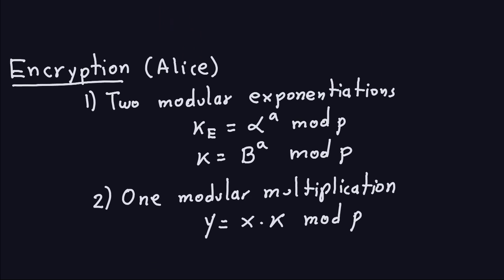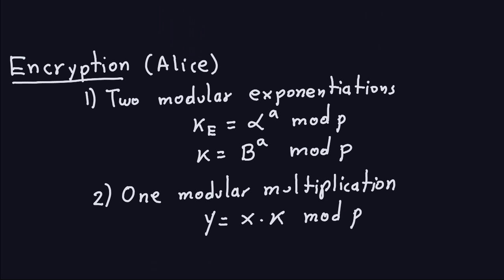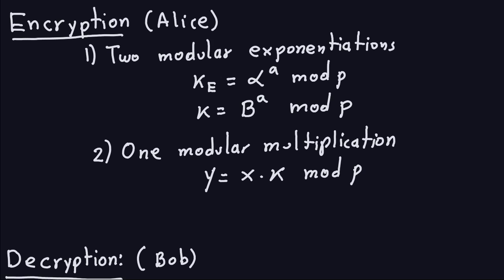For encryption, Alice has to perform two modular exponentiations. One computes the ephemeral key — that is alpha to a randomly chosen number between 2 and P minus 2 from Alice — using the square-and-multiply algorithm. The other computes the shared key, which is B (public) raised to Alice's random exponent A. Then there is one modular multiplication: the plaintext X times the shared key, all modulo P.